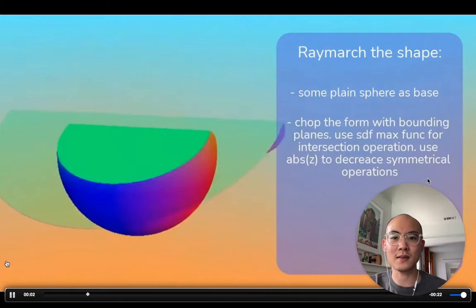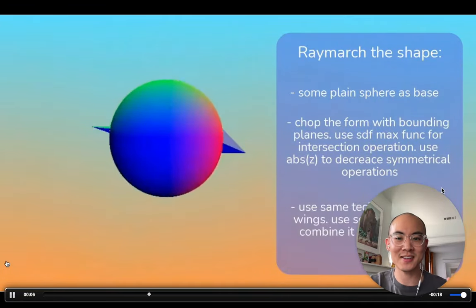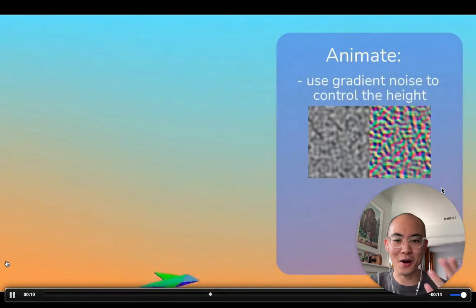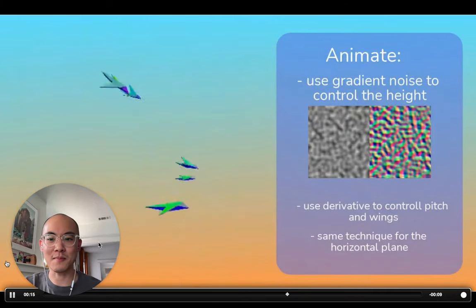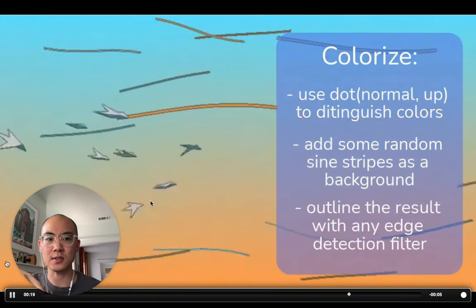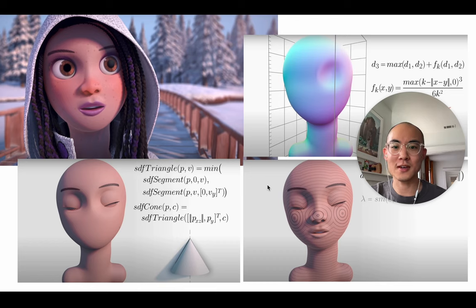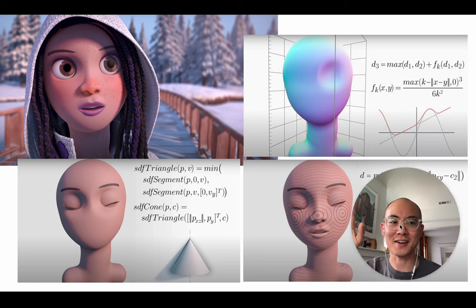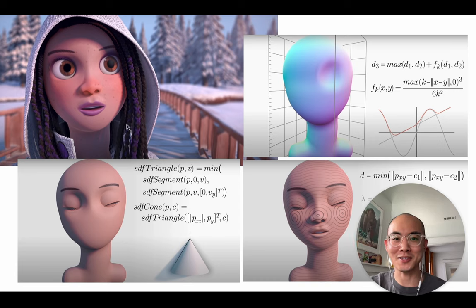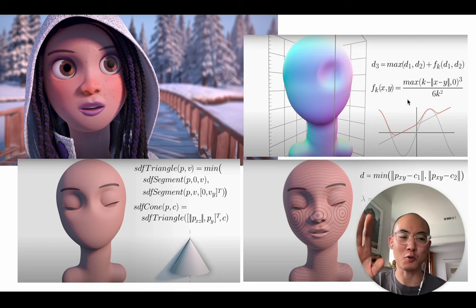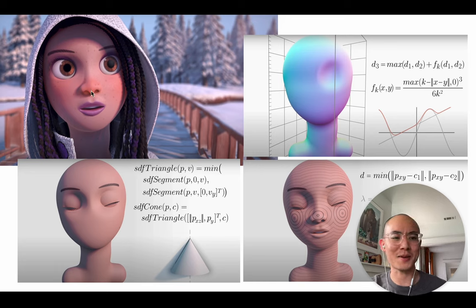Here are more examples of signed distance field math-based modeling: someone modeling and animating a bird using only math — only equations in a shader, no textures. Inigo Quilez — Q-U-I-L-E-Z — is a really brilliant SDF pioneer who can make a full 3D model of a person only based on math. If you watch his videos, it's like: you take a cone and that cone somehow becomes the nose, doing math operations to smooth and round it — doing dot products, matrix math, things I don't fully understand. Very crazy stuff.